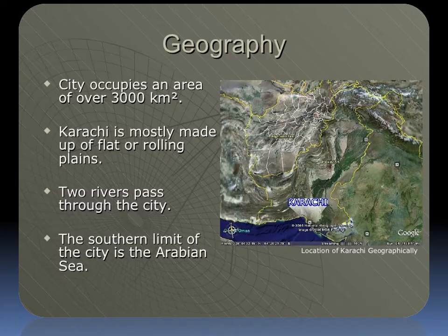Now we will learn about the geography of Karachi. The city occupies an area of over 3,000 square kilometers. Karachi is mostly made up of flat or rolling plains, and two rivers pass through the city. The southern limit of the city is the Arabian Sea.